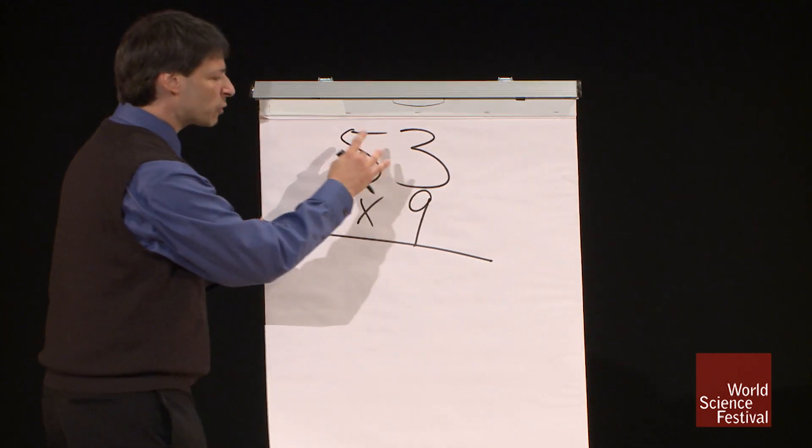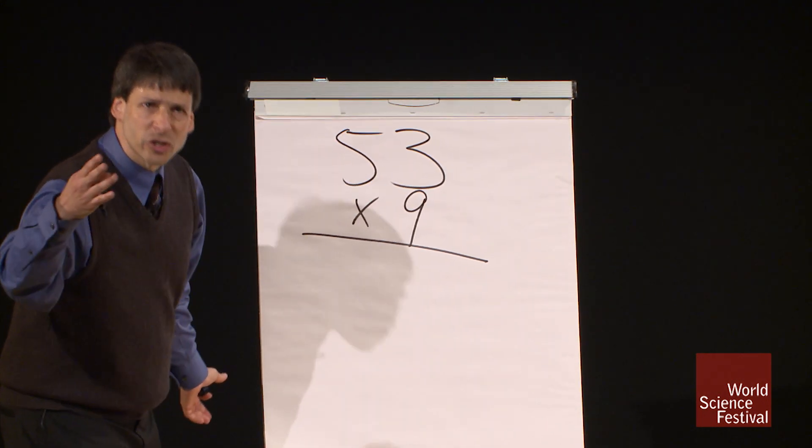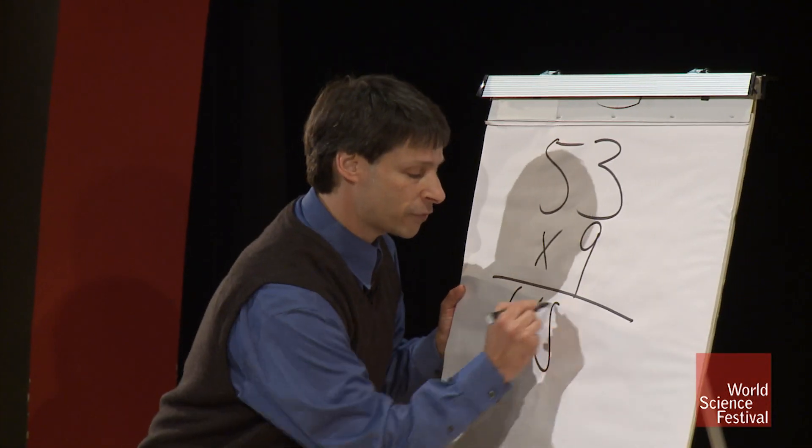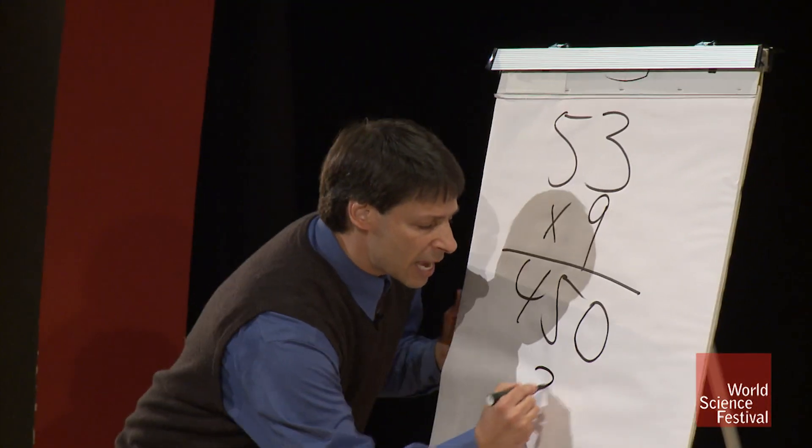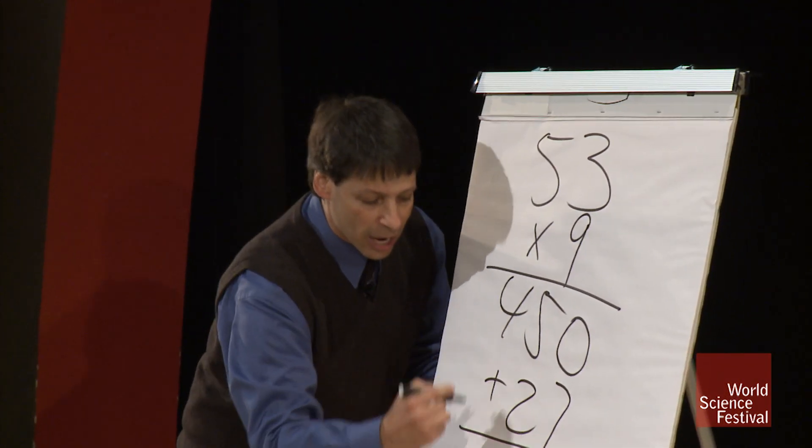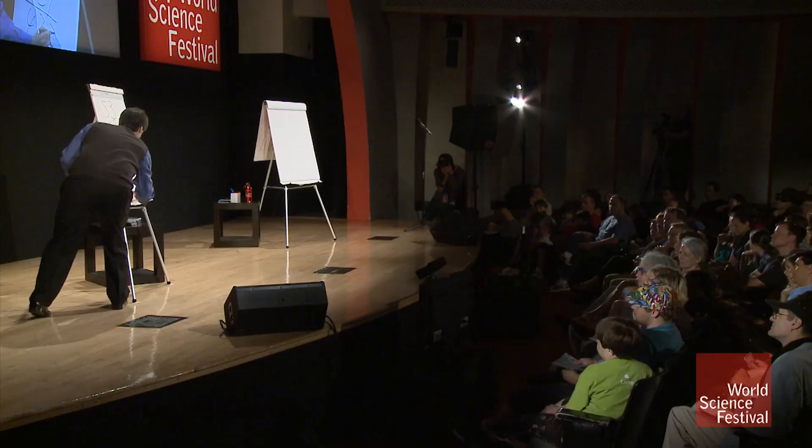We start with nine times fifty. Nine times five is forty-five, so nine times fifty is four hundred fifty. Then we do nine times three, which is twenty-seven. Now we add those numbers from left to right, and we get four hundred and seventy-seven.